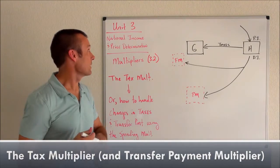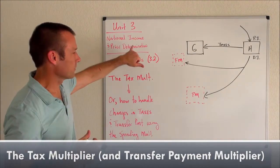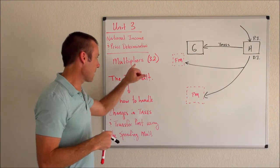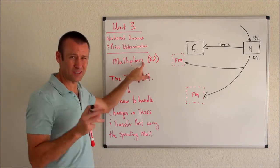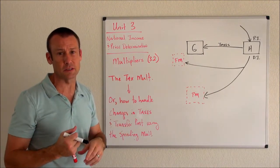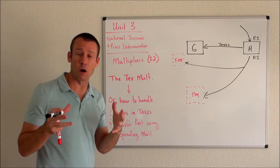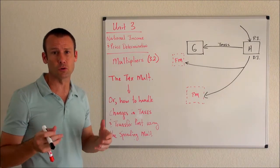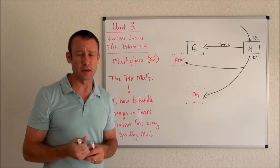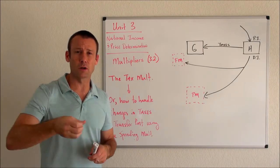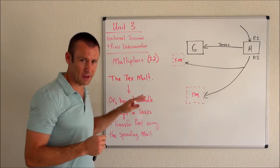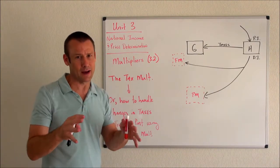Hey everybody, welcome back. Unit 3 — National Income and Price Determination, that's the name of the unit. Focusing on multipliers: there are actually two multipliers in this unit. One is the spending multiplier — that's tested the most. There's another one called the tax multiplier, and this video is focused on that one, kind of.